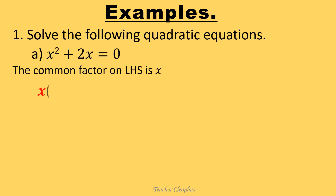So we write x, then open the brackets. What can we multiply by x to give us x squared? It is x, and we put it inside the brackets. Then the term that we multiply by x to give us positive 2x is positive 2. We write it inside, then close the brackets equals to zero. Whenever we have two terms being multiplied and the result is zero, then it means automatically that one of the two factors or both must be zero.